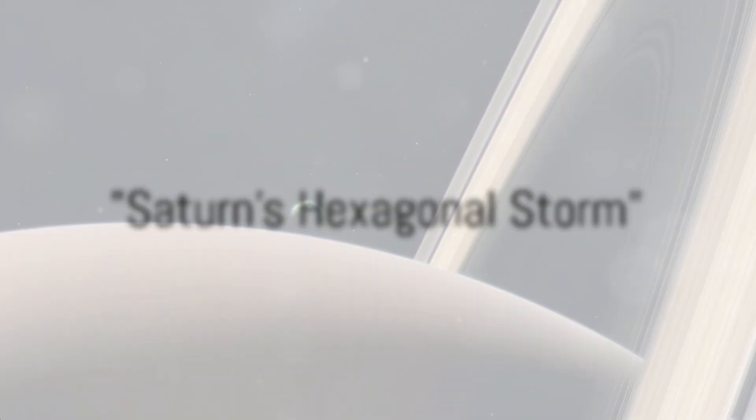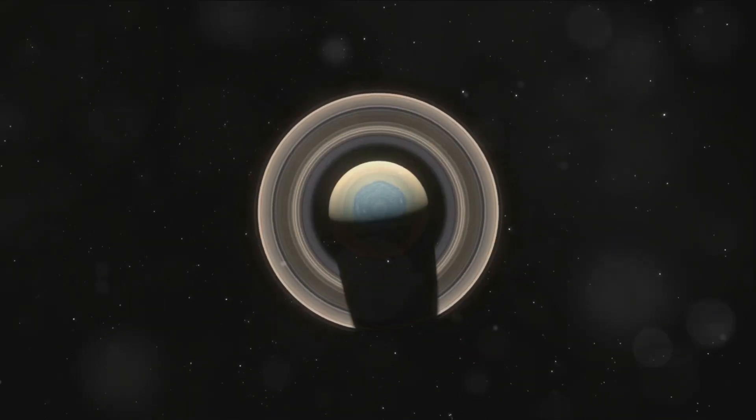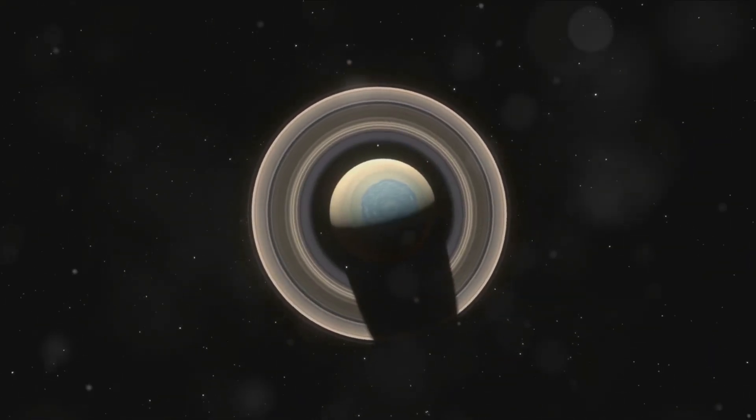Starting at number 5, we have Saturn's hexagonal storm. Now this isn't just any storm. This is a storm that has baffled scientists since its discovery back in the early 80s by NASA's Voyager mission.